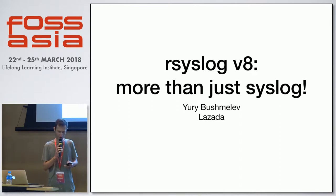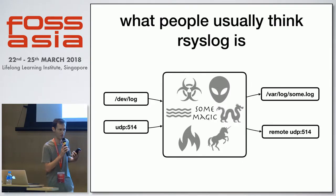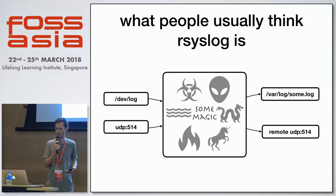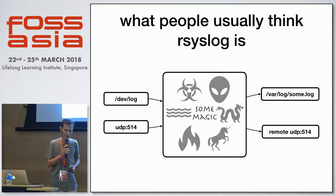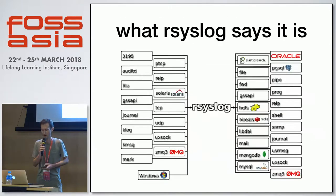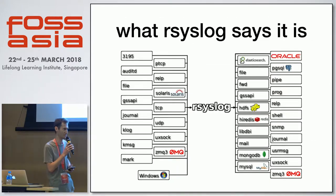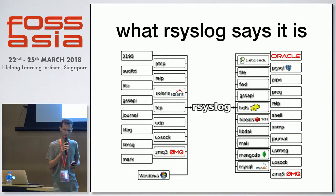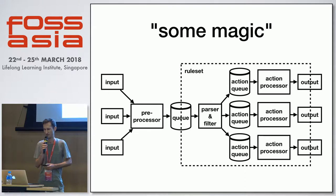This is what people usually think about rsyslog — it's some kind of black magic which can transfer your syslog, written to /dev/log or to UDP port 514, to some log files or to some remote host. There is actually a bit more to it. rsyslog has a lot of inputs, a lot of outputs, and can do some changes in the middle.